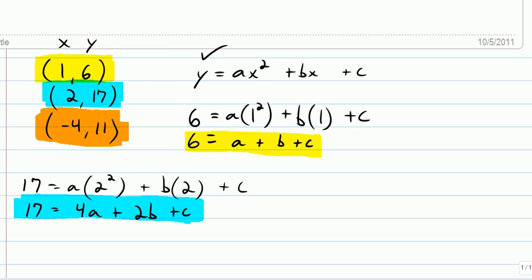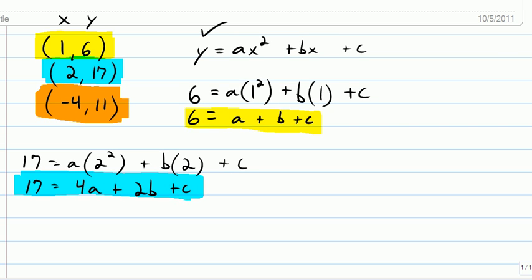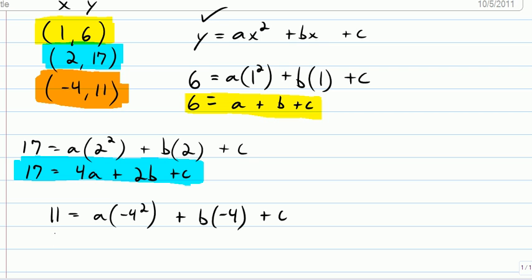So we need one more equation. We've got three variables, we want three equations to solve the system. So I have the orange one. So we've got 11 for y. So 11 equals a times negative 4 squared. Negative 4 squared will be 16, plus b times negative 4 plus c. I clean that up a little and I get 11 equals 16a minus 4b plus c. So that's my third equation.